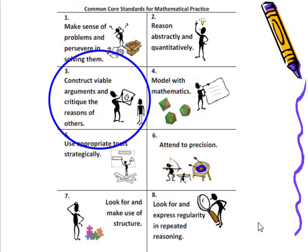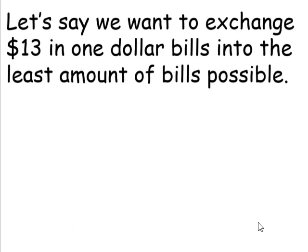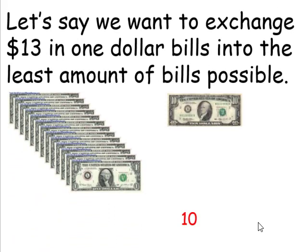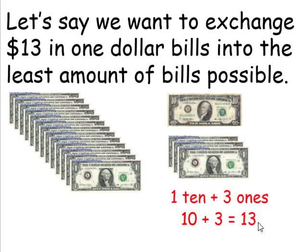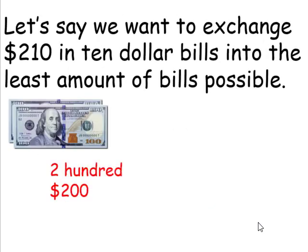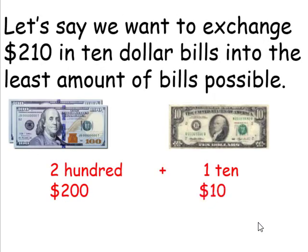The mathematical practice we'll take a closer look at is construct viable arguments and critique the reasoning of others. Let's say we wanted to exchange 13 $1 bills into the least amount of bills possible. In this particular case, we would have a $10 bill, which is worth $10, and three $1 bills, which is worth $3. 10 plus 3 is 13. How about $210? We'll have two $100 bills plus one $10 bill. Let's keep this in mind when we're adding.